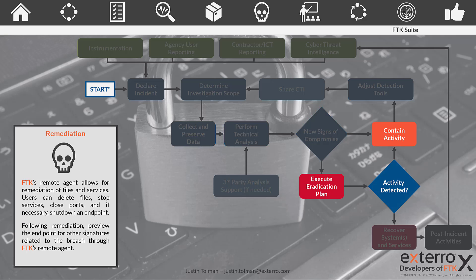Once we've gone through and analyzed to figure out what we're dealing with, we need to remediate — contain and get rid of the stuff within our network that shouldn't be there. FTK allows you to do full remediation: you can delete files, stop services, and close ports. This is very beneficial as you can close all the ports except the one FTK uses to communicate with that box, preventing access to any other resources within the network and allowing you to continue to collect or remediate without the threat of it spreading. When we talked about the contain activity phase within the playbook, we discussed not tipping off the attacker. By immediately shutting down the ports, you lock them out of that resource and prevent them from jumping to something else or at least mitigate the risk.